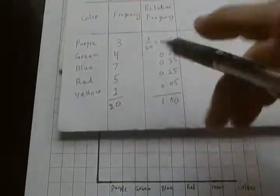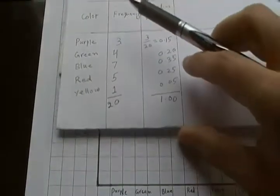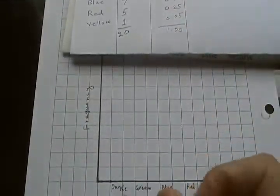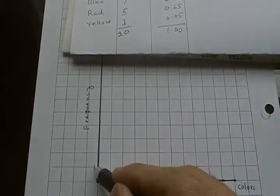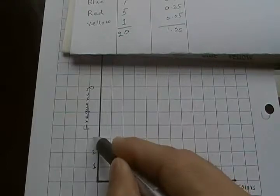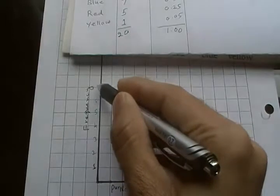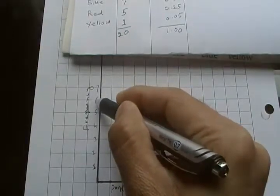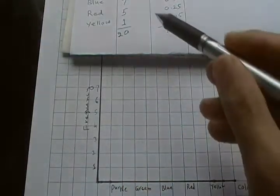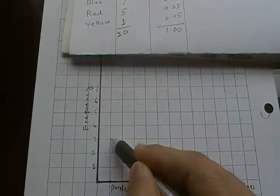From the table, the numbers are like 3, 4, 7, 5, 1. My frequency numbers would go like this: 1 here, 2, 3, 4, 5, 6, and 7. First start with purple - purple has a frequency 3 so the height would be this one.